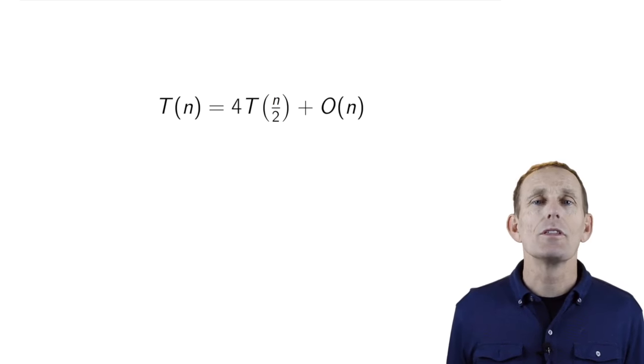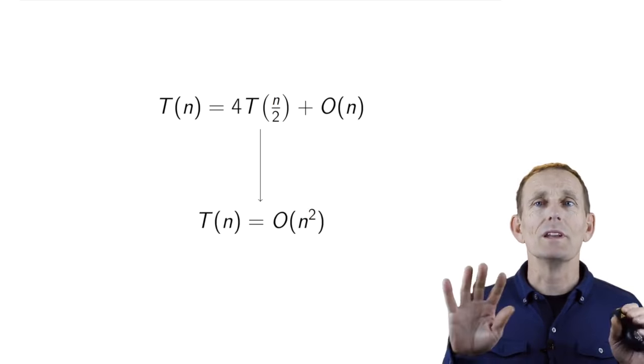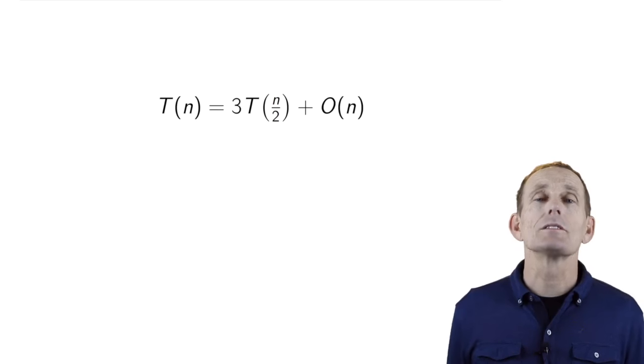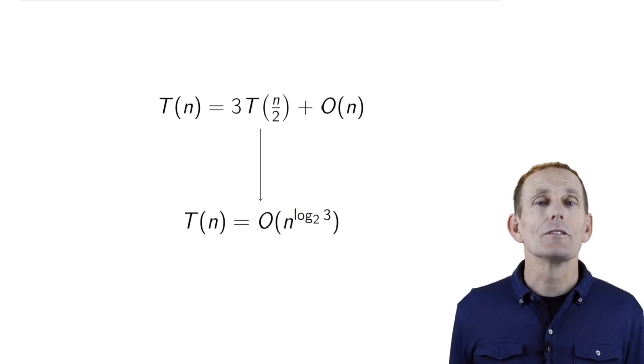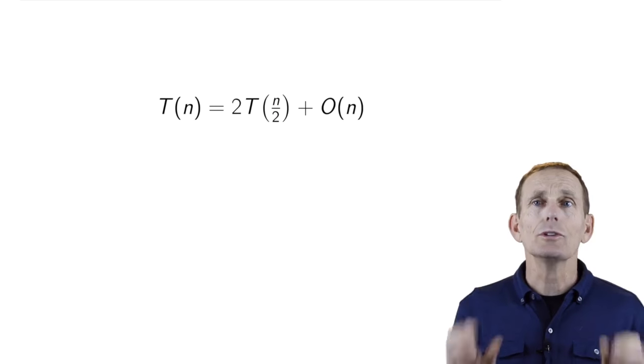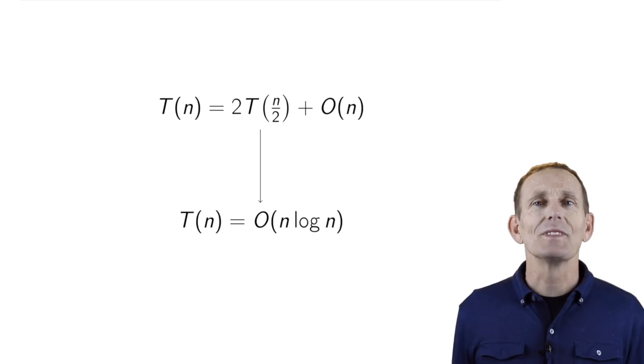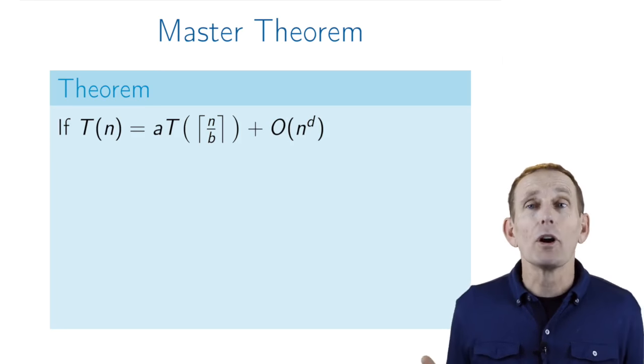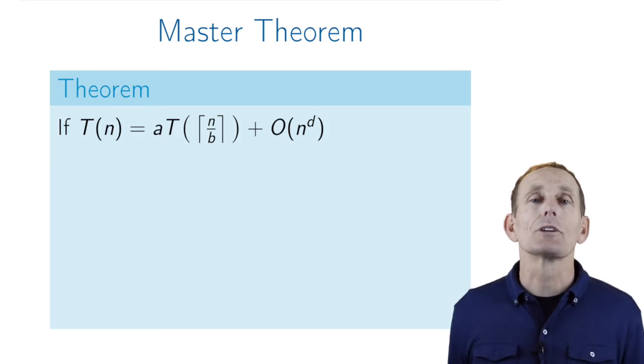Here's an example that we used for the polynomial multiplication. We broke a problem into four subproblems, each half the size, and did a linear amount of work, and the solution was T(n) equals big O of n squared. When we had the more efficient algorithm, where we had only three subproblems instead of four, we got a solution of big O of n to the log base 2 of 3. Sometimes we break a problem into only two subproblems, and there the solution is big O of n log n. So wouldn't it be nice if there was a way that we just had a formula to tell us what the solution is, rather than having to create this recurrence tree each time? And that's what the Master Theorem basically does.